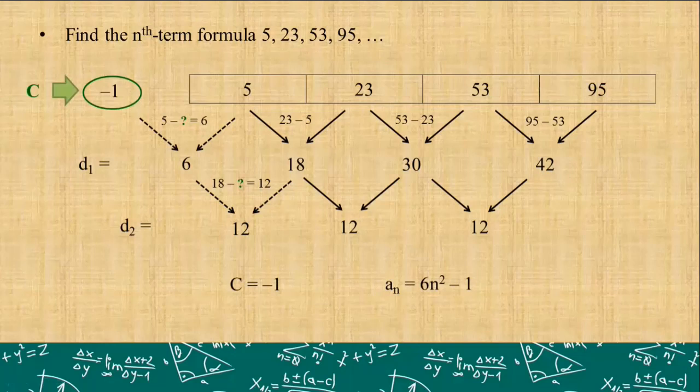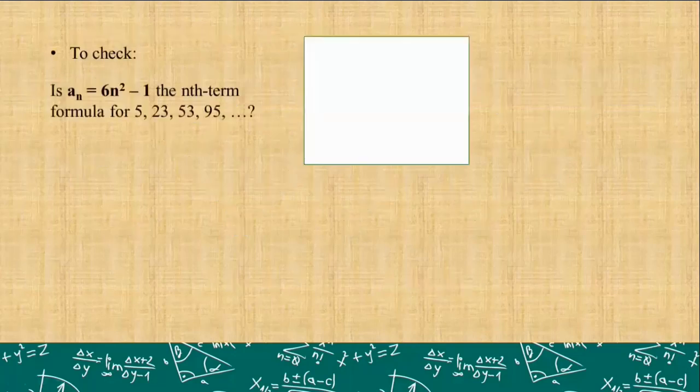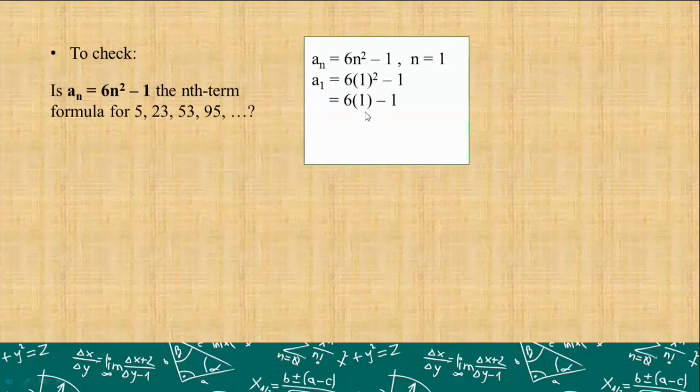We will test it using n equals 1, 2, 3, 4, to see if these will come out. To check, let's use the formula, but this time n equals 1. Substitute, we'll get this part. 1 squared is 1. 6 times 1 is 6. Minus 1, we have 5. So it matches the first term.